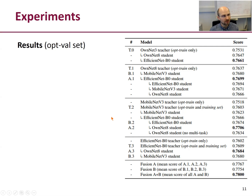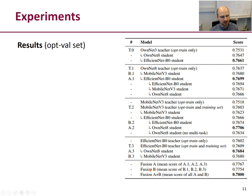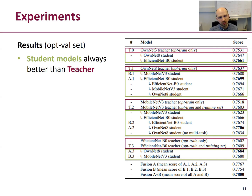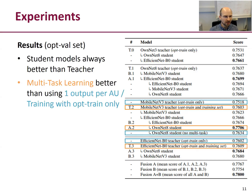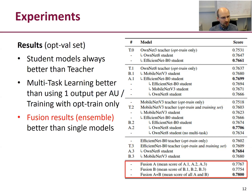Now let's look at the experimental results on the opt-val set, our own validation set which is part of the optimization set. We see results for several teacher and student models, and ensemble fusion results at the bottom. First, student models are always better than teacher models, so self-training really helps. Second, multitask learning is better than using only one output per action unit and better than training only with the opt-train set. Third, ensemble results are better than all single model results.